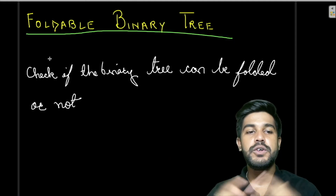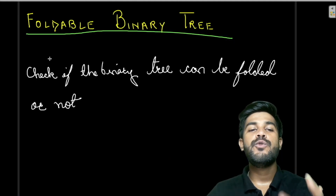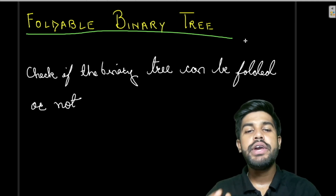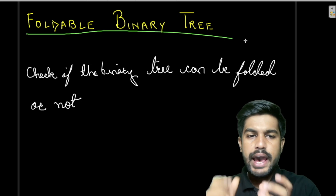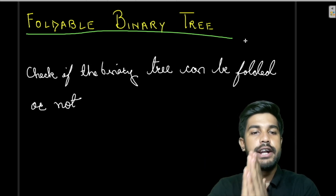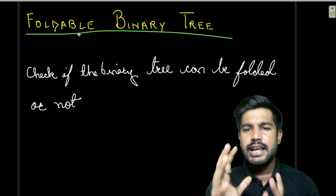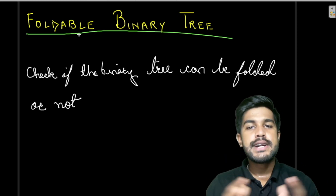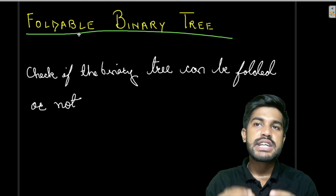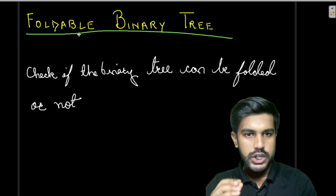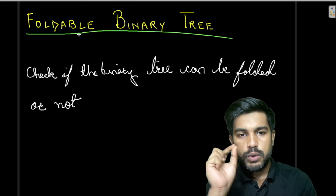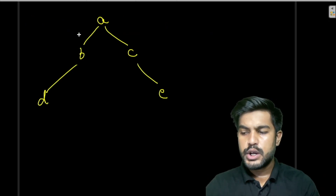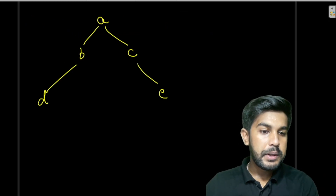Hi and welcome to GeeksForGeeks. Today we would be discussing the problem 'Foldable Binary Tree'. We are given a binary tree and we just need to check if it can be folded or not. The first prerequisite is binary tree — a tree which can have at most two children, meaning the number of children can be zero, one, or two, not more than that. Now, what is 'folded'?